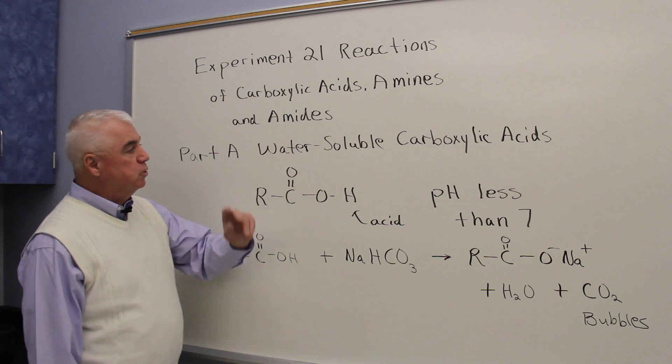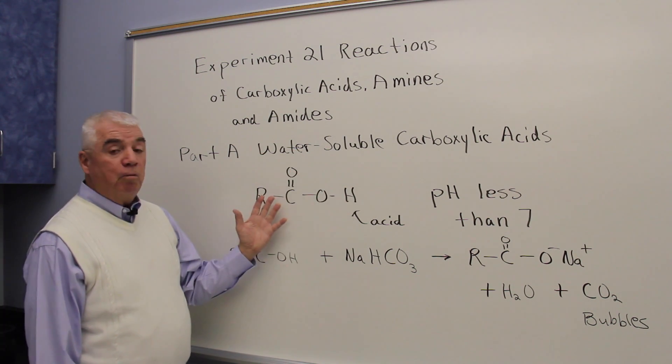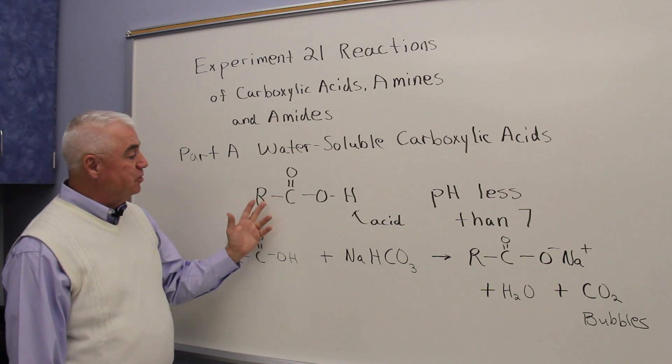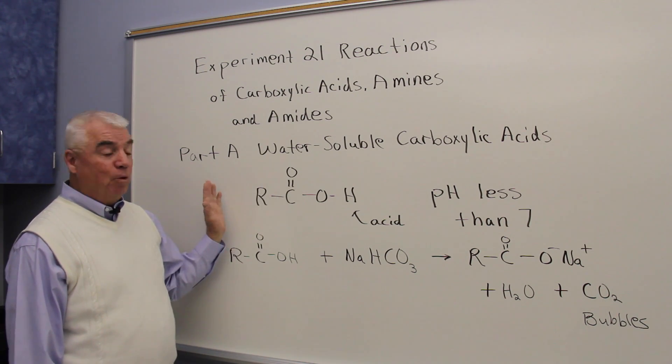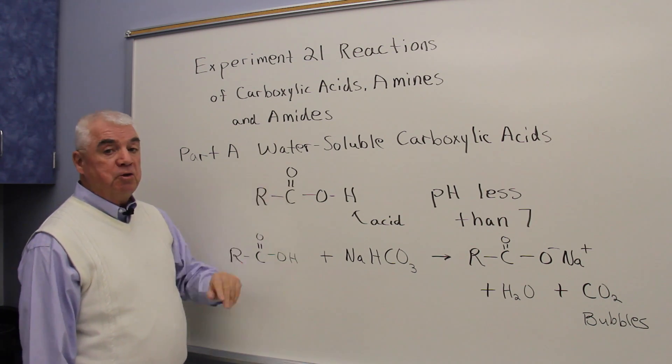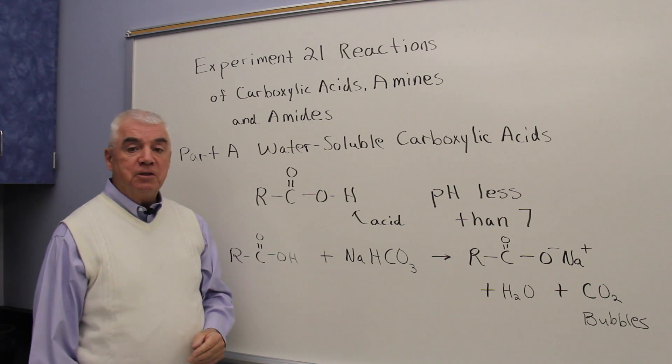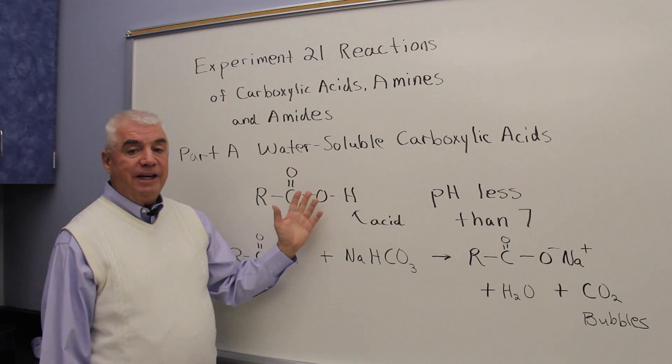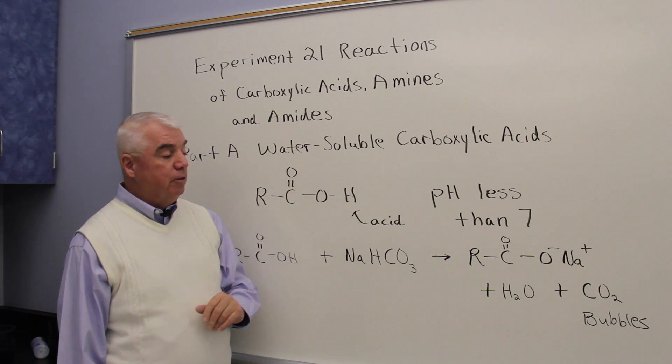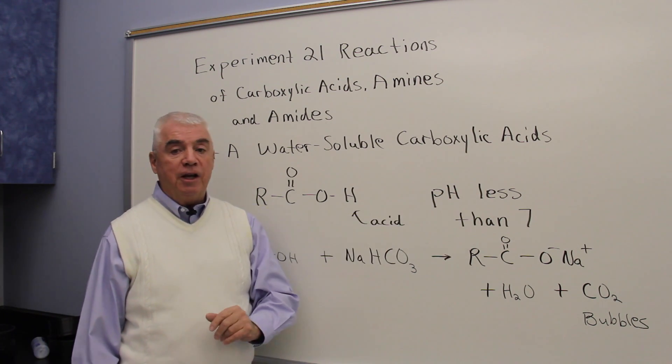Part A deals with water soluble carboxylic acids. Here's a general formula for a carboxylic acid. Remember that R simply stands for the rest of the molecule. It could be one carbon or six or a ring or whatever. And this hydrogen right here is the acidic hydrogen. So when carboxylic acids dissolve in water they're going to produce an acidic solution. That means a pH less than seven.